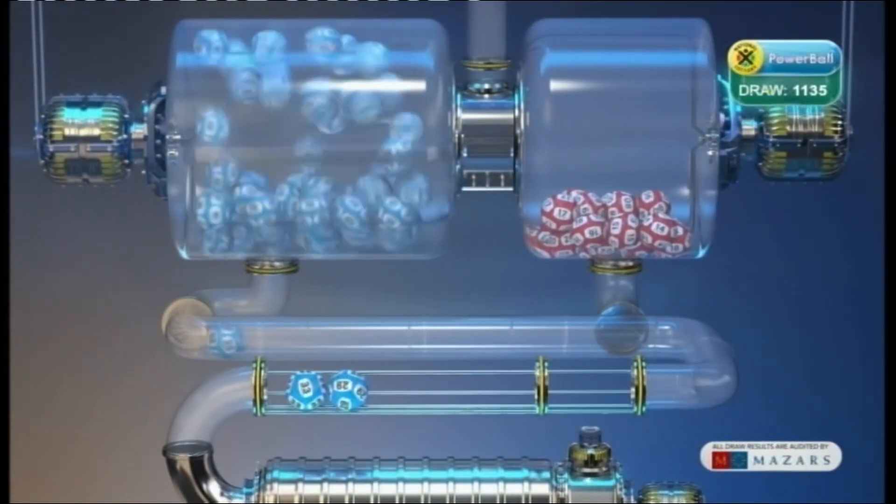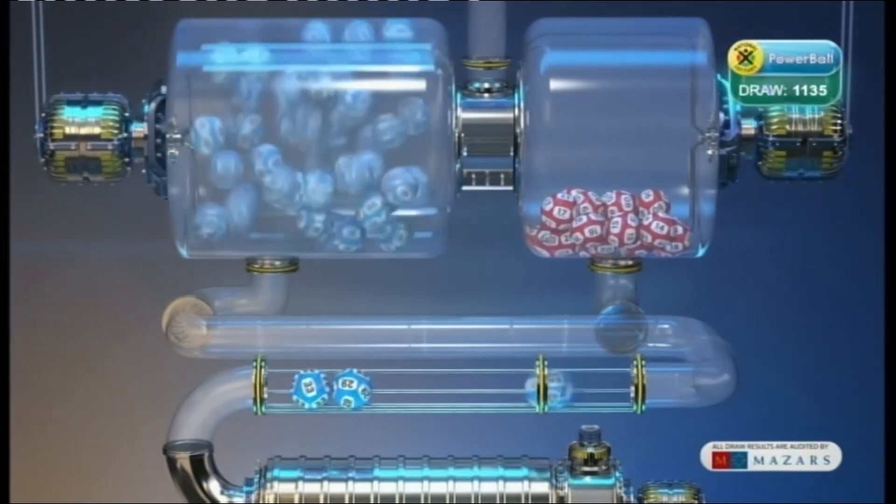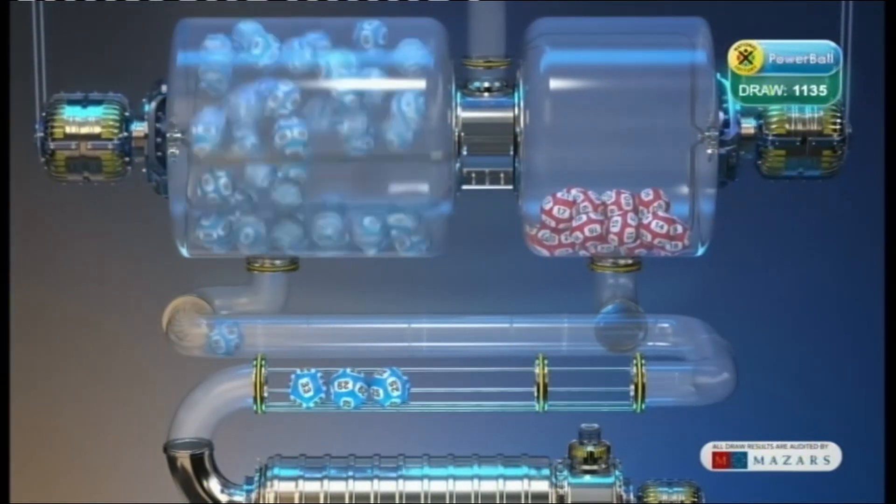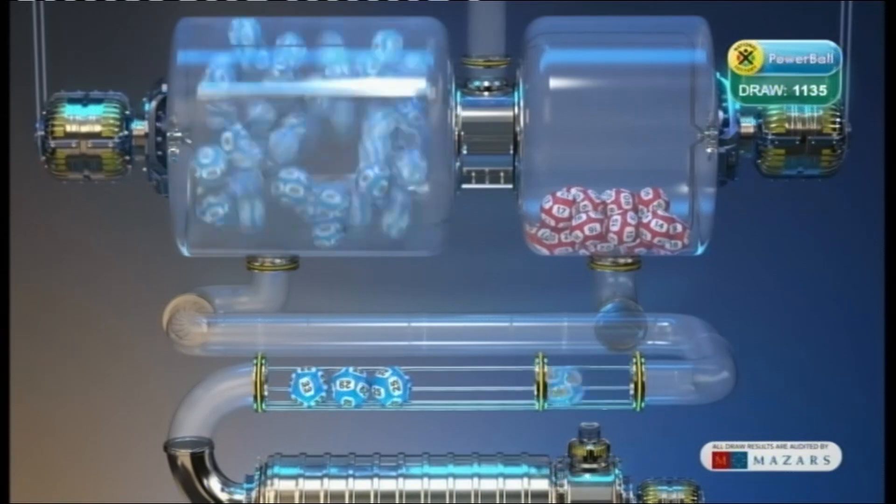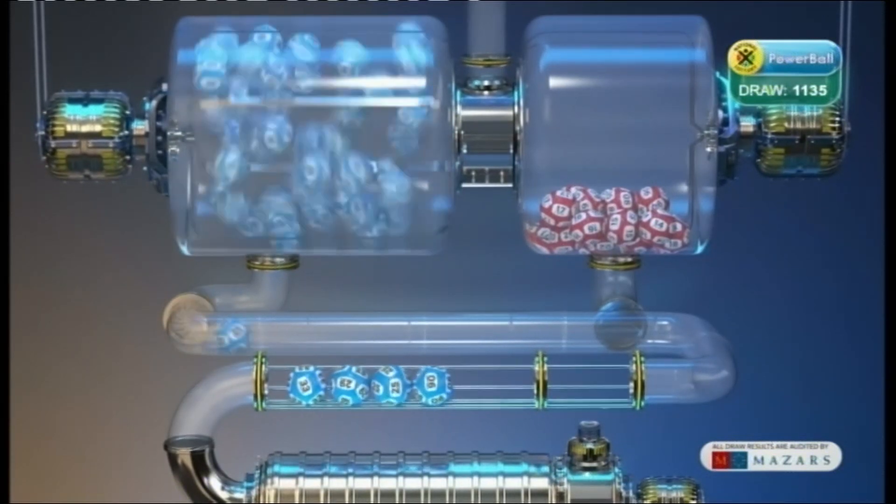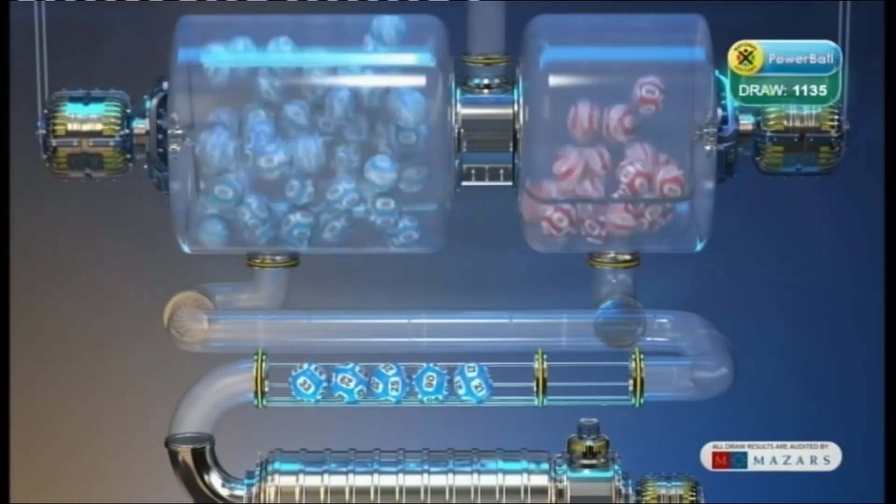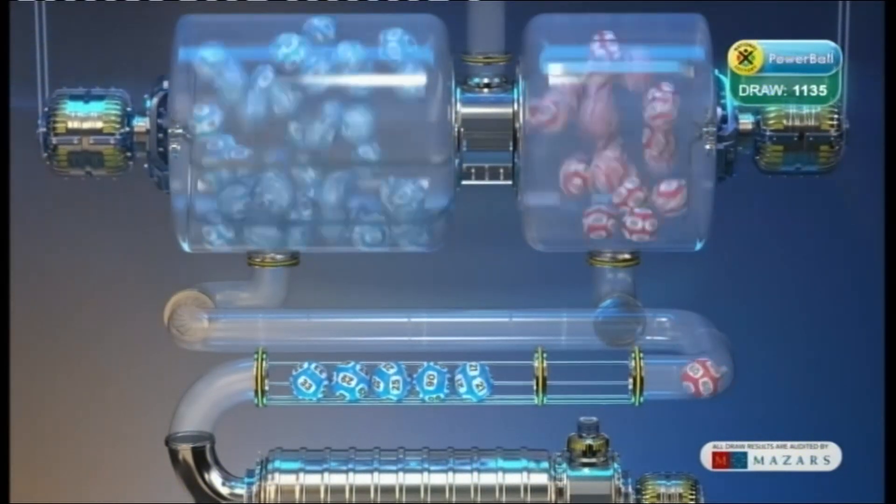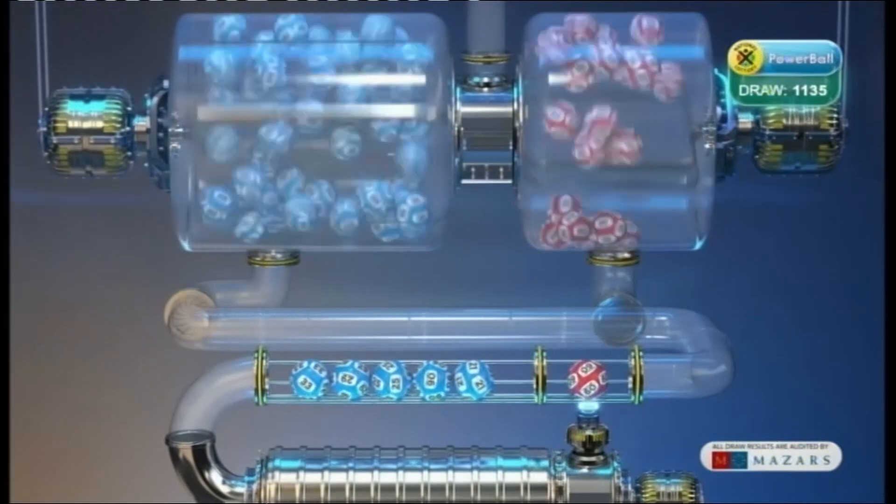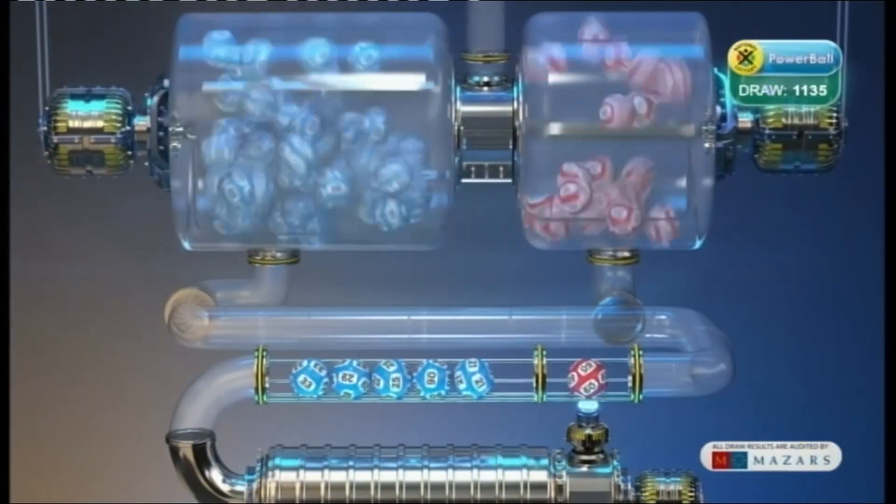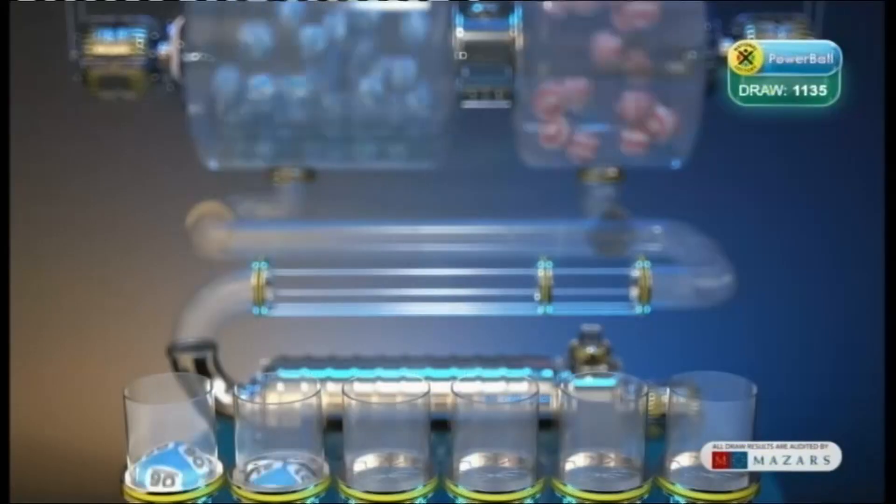33, 29, 25, 6, 21, and the Powerball is 9. Let's recap these numbers in numerical order.